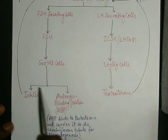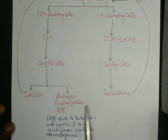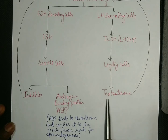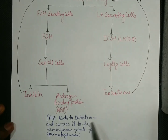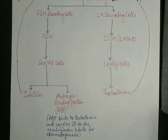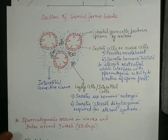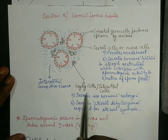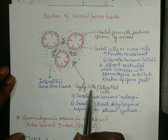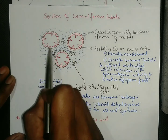FSH acts on Sertoli cells to release two substances: inhibin and ABP, that is androgen binding protein. LH acts on Leydig cells to release testosterone. Testosterone is required for spermatogenesis, and the Leydig cells that release testosterone are located at the interstitial spaces.